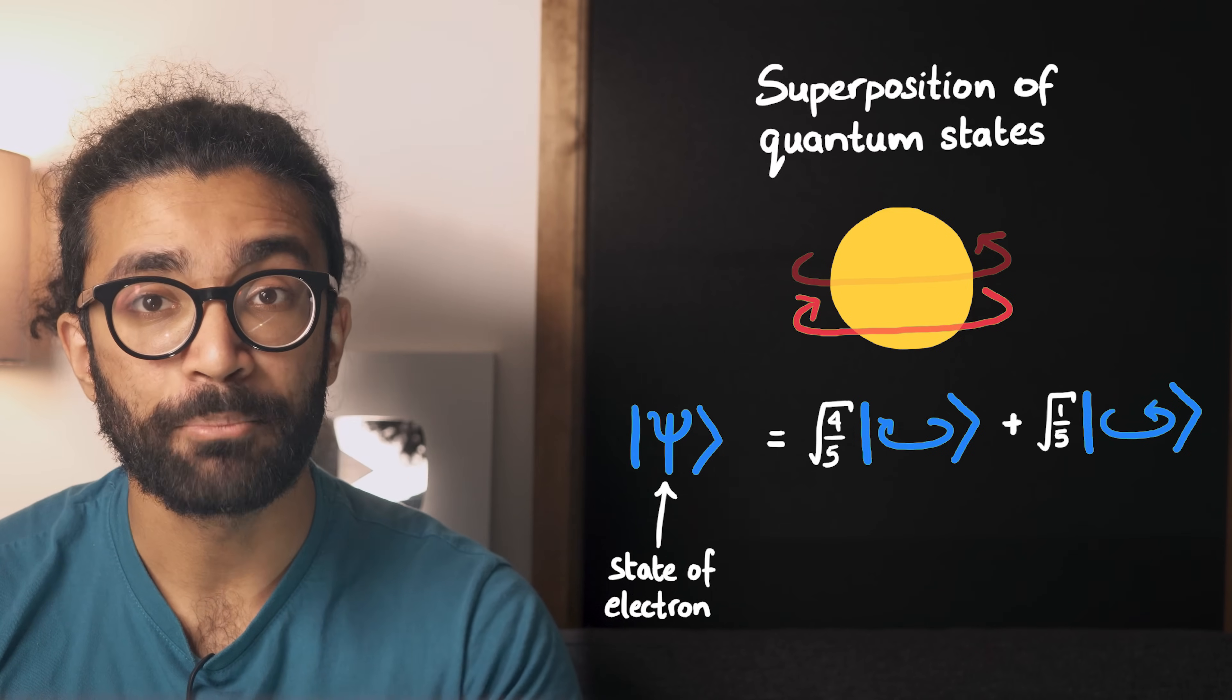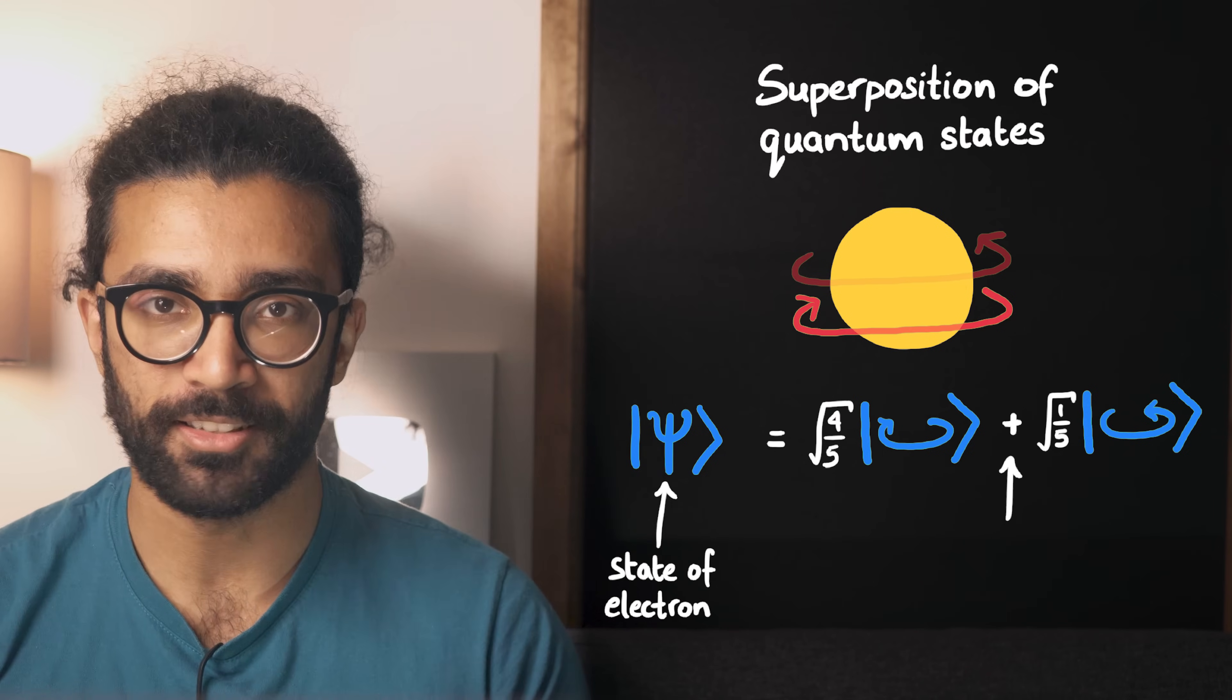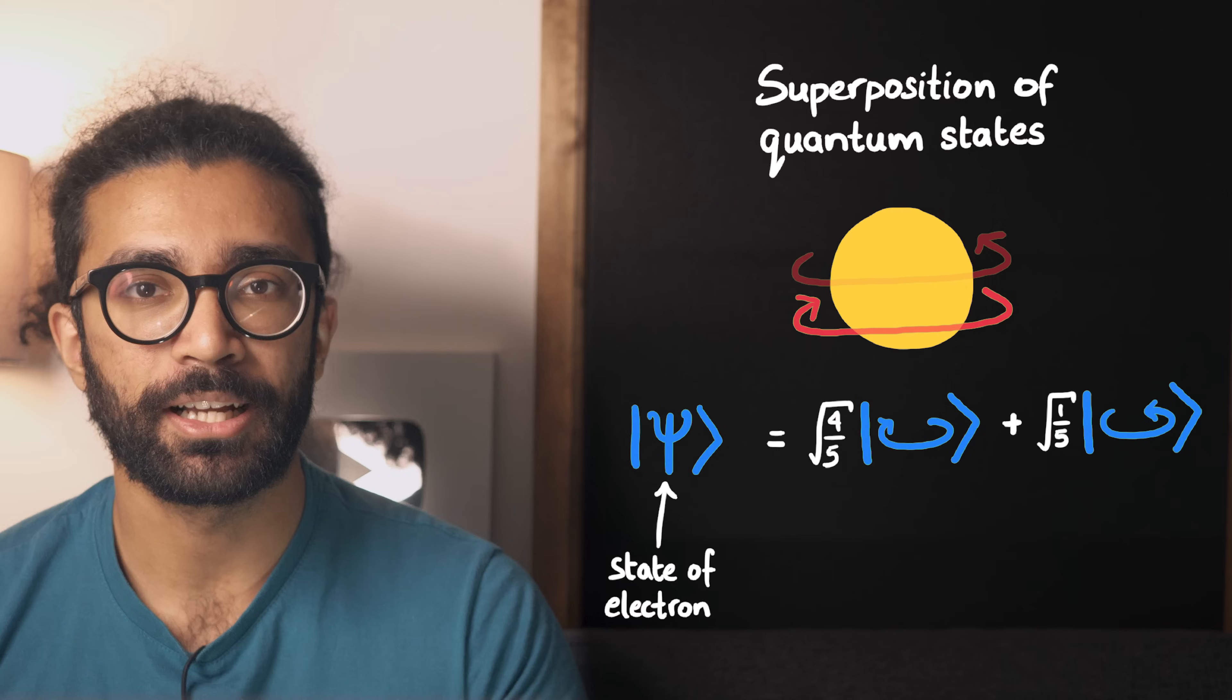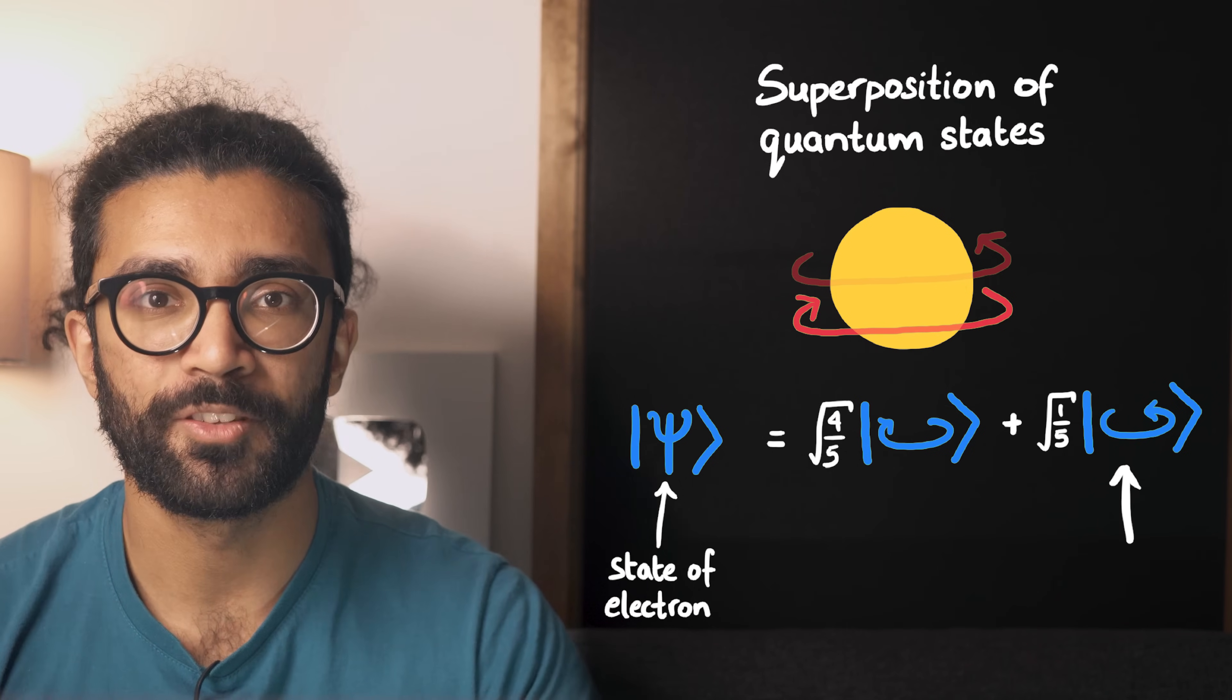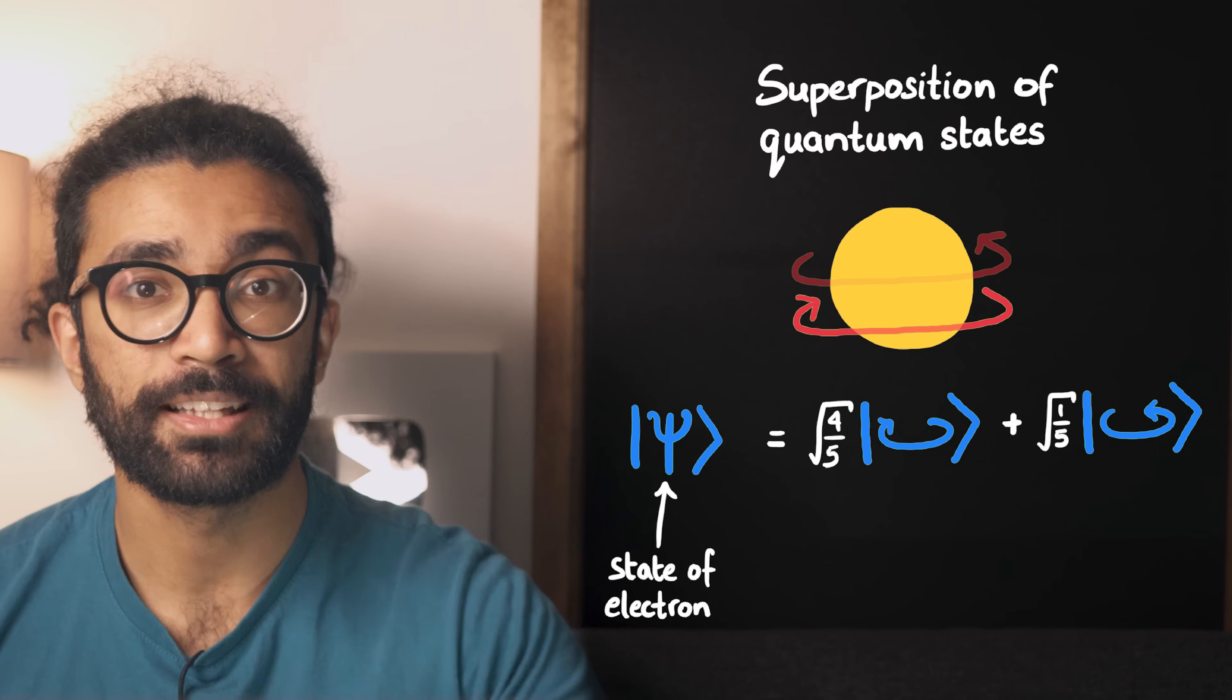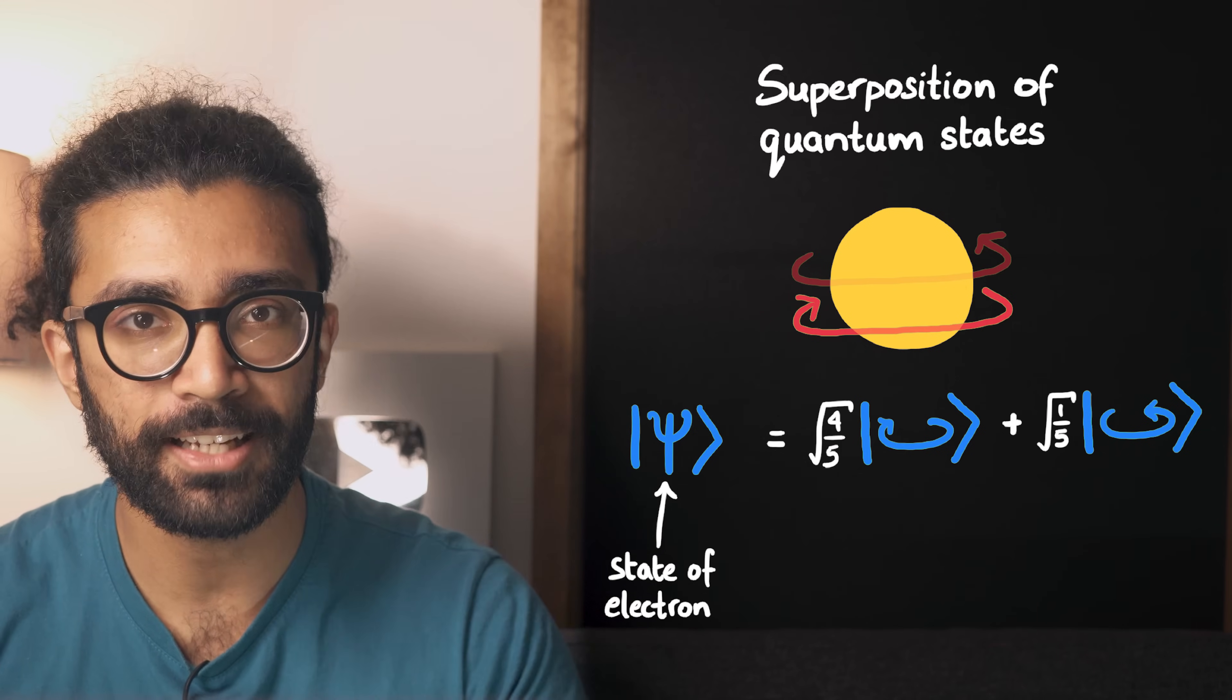Now, this superposition of states can be represented by adding different amounts of the two spin vectors together. Just as we described, this quantum state is created by combining some amounts of the spin clockwise state and some amounts of the spin anticlockwise state.